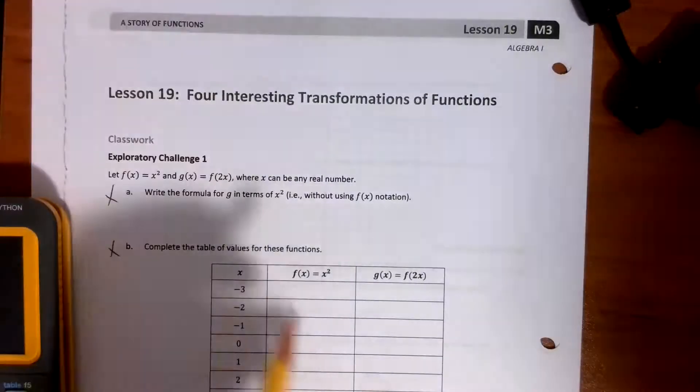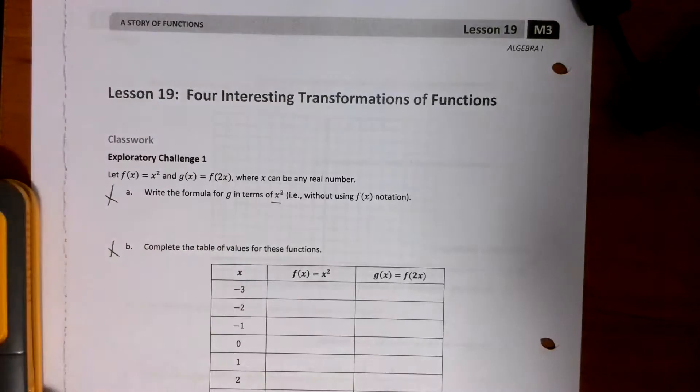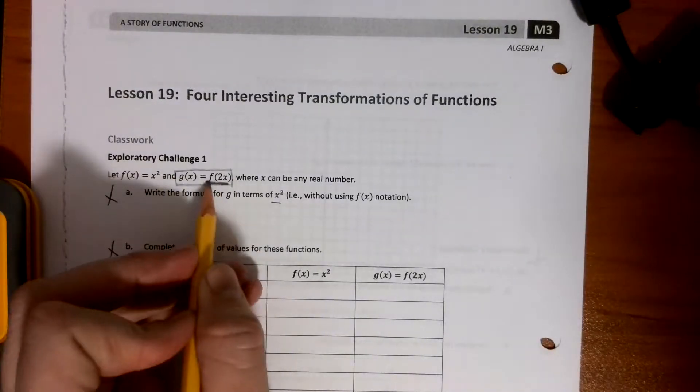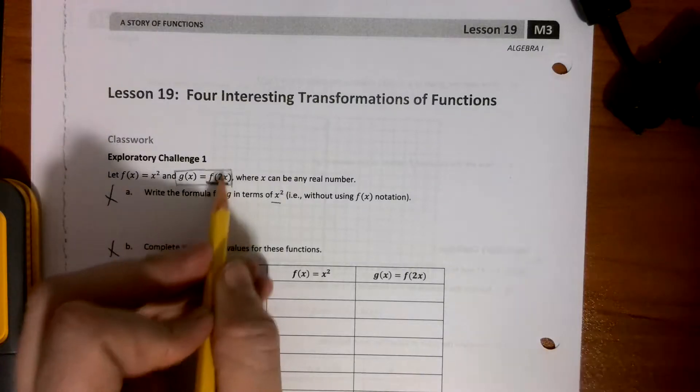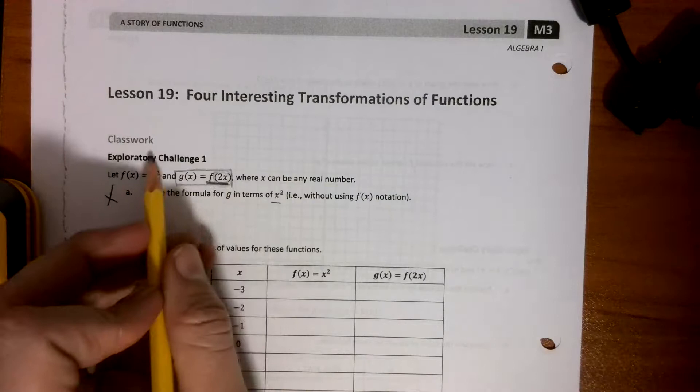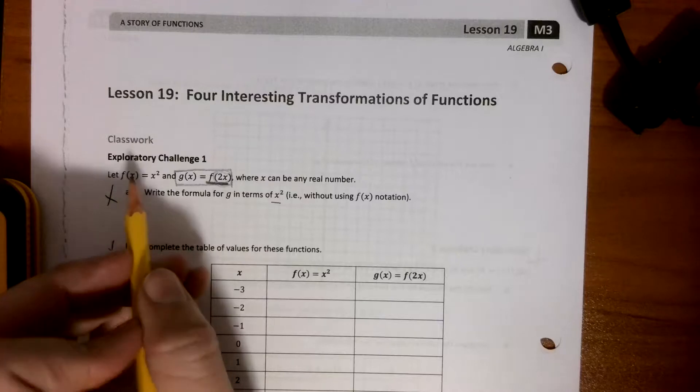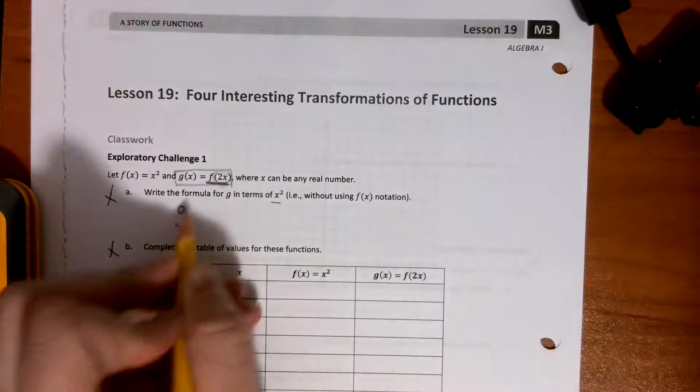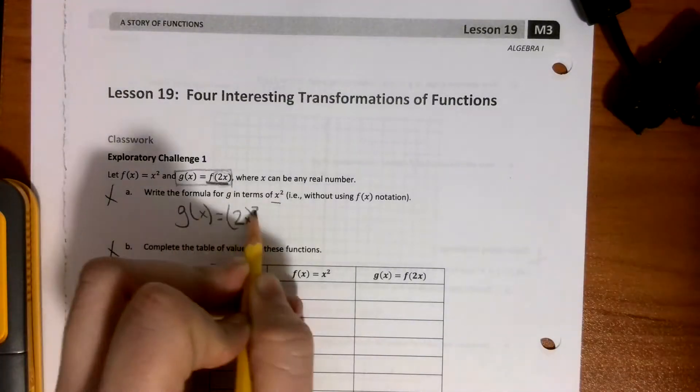Alright, so the first thing we have to do here is we have to write a formula for g in terms of x to the second power, or x squared. So see how g of x right here, and you see f of 2x, this means that this part in the parentheses has to replace the x because it's replacing this parenthesis. So 2x has to be put in place of an x. So now our new equation would be g of x equals 2x to the second power.